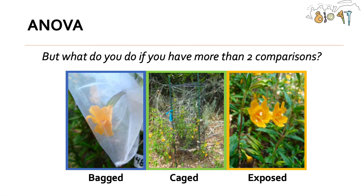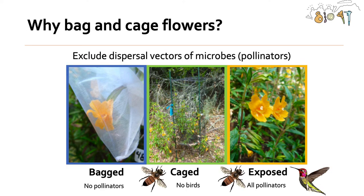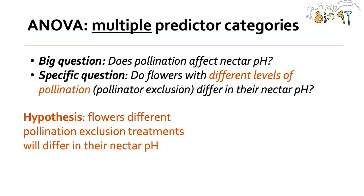Moving on to ANOVA: we learned some intuition about comparing two groups measuring a continuous variable, but what if you have more than two comparisons? In our class we've been measuring nectar parameters and nectar microbial communities in three different treatments: flowers exposed to air and pollinators, flowers inside cages that exclude large pollinators, and flowers that are bagged to exclude all pollinators. Exposed flowers have access to all pollinators; caged flowers exclude birds only, which are the main pollinators of Mimulus; and bagged flowers have no pollinators allowed.